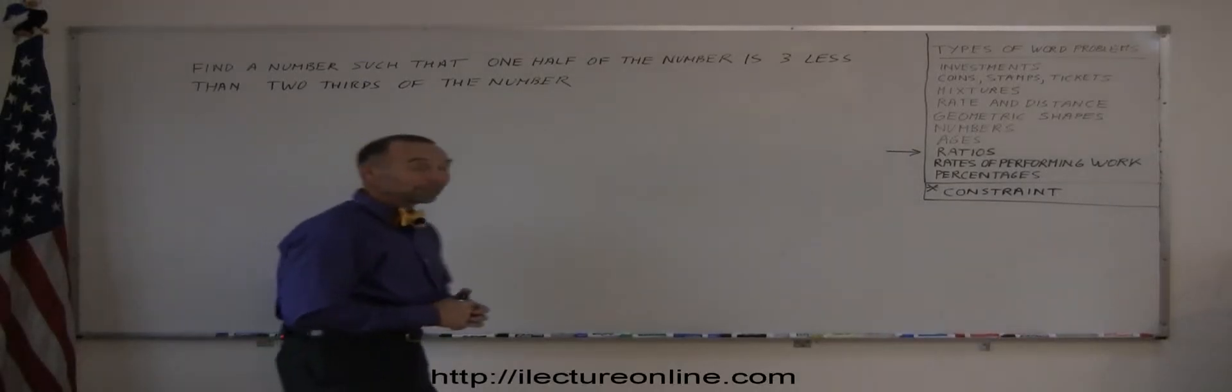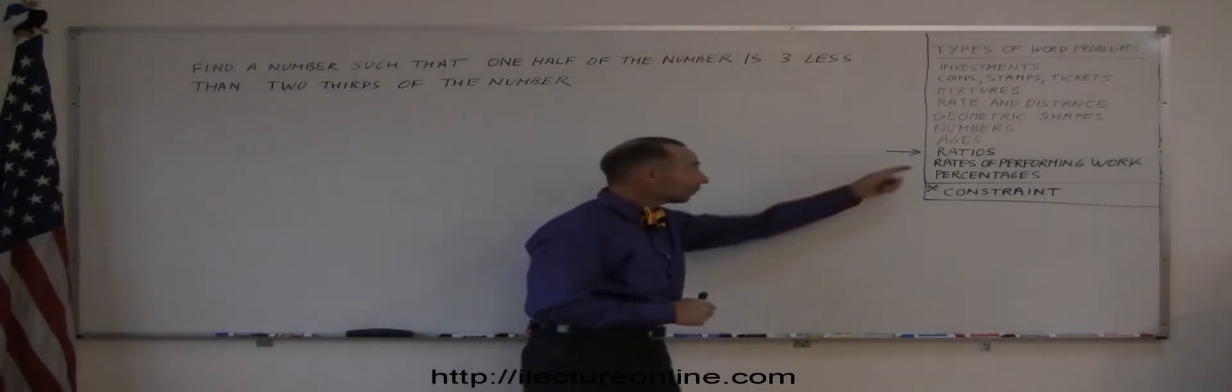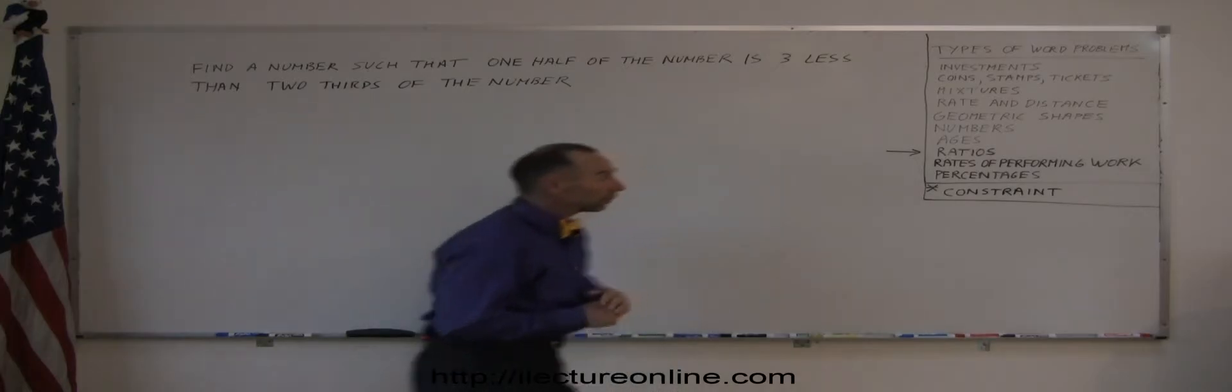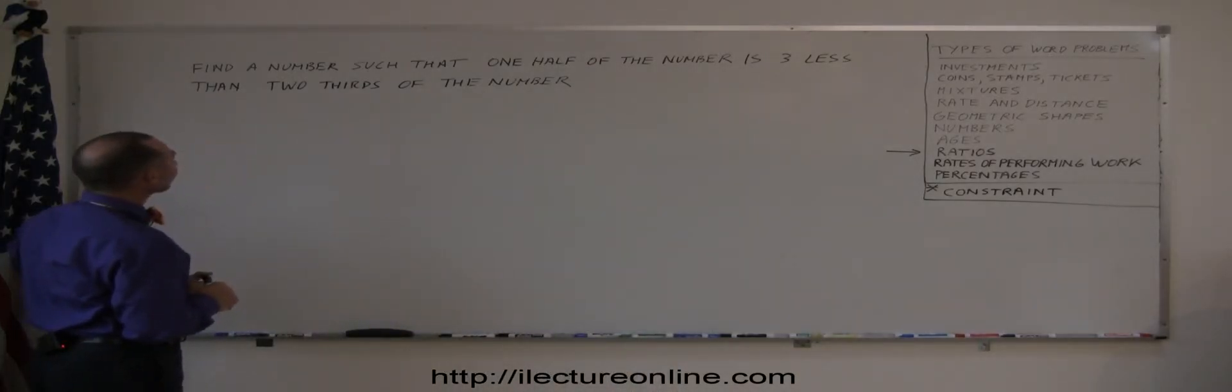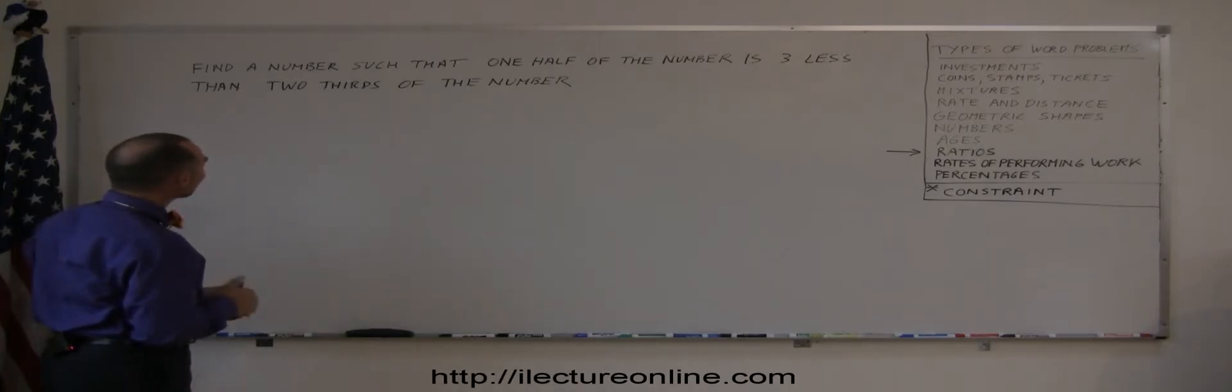Another example of a word problem in algebra, and again we're dealing with something involving ratios. The example is: find the number such that one-half of the number is three less than two-thirds of the number.